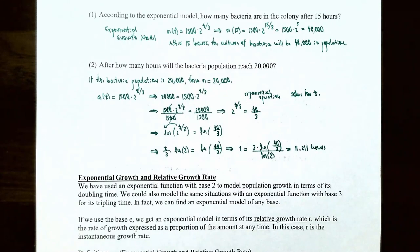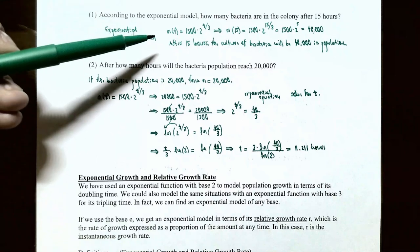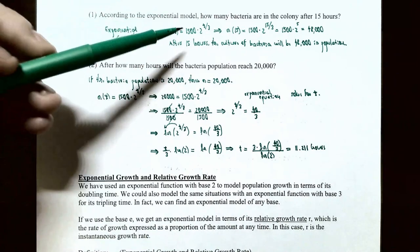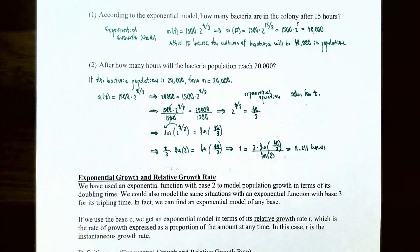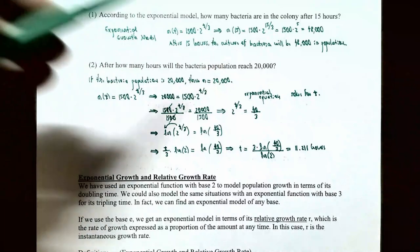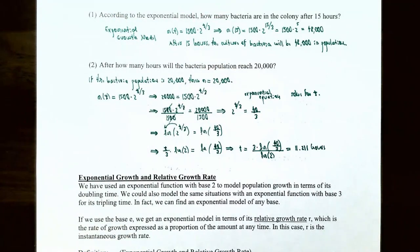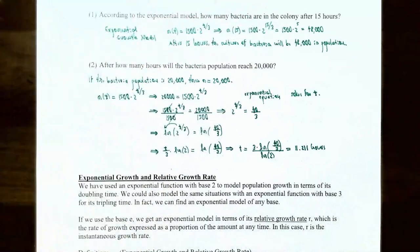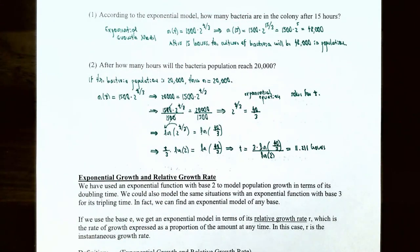Part 1: according to the exponential model, how many bacteria are in the colony after 15 hours? Recall the model is n(t) = 1,500 · 2^(t/3). Replacing t with 15: n(15) = 1,500 · 2^(15/3) = 1,500 · 2^5 = 1,500 · 32 = 48,000. So after 15 hours, the colony of bacteria will contain 48,000.